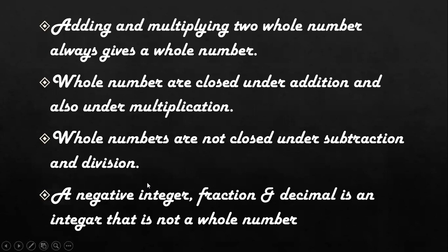Adding and multiplying two whole numbers always gives a whole number. Whole numbers are closed under addition and also under multiplication. Whole numbers are not closed under subtraction and division.